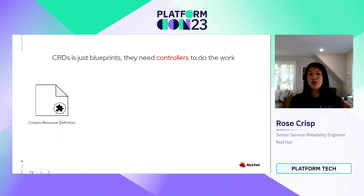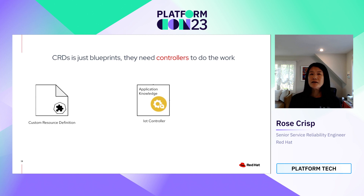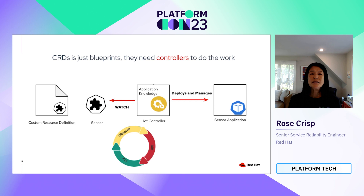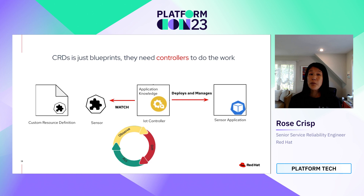CRDs alone don't do much — they are just blueprints that define the structure and behavior of a custom resource. You also need a custom controller to manage and operate on these resources. A custom controller includes the business logic to manage your workload. For the IoT example, a custom controller watches for the sensor resource, and when it finds it, the custom controller will deploy a sensor application if it doesn't already exist. It uses the same reconciliation logic as Kubernetes, which involves watching, diffing, and acting on differences between the current and desired state of the cluster. By combining CRD with a custom controller, we can create powerful custom resources that automate complex operations.